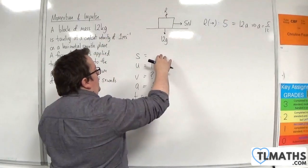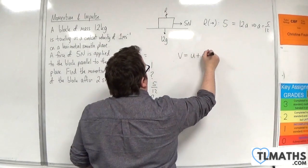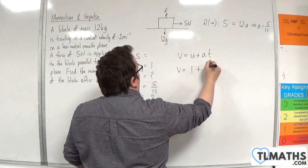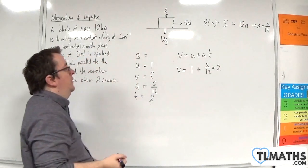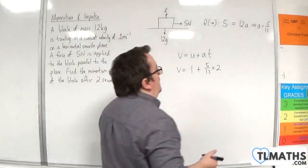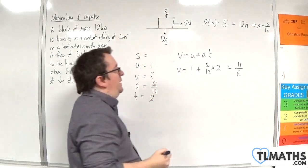So the SUVAT formula that doesn't involve S is V equals U plus AT. So V is equal to 1 plus 5 twelfths times 2. So that's 1 plus 5 sixths and that's 11 sixths meters per second.